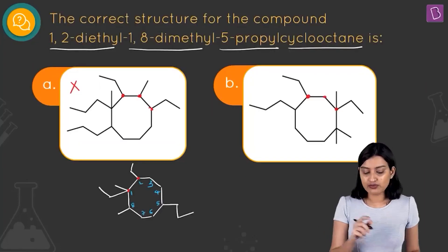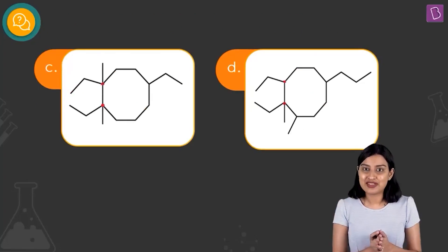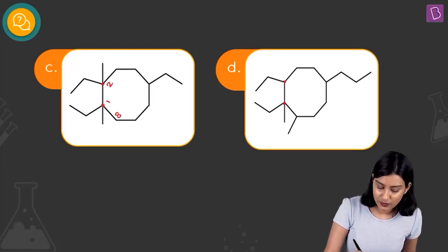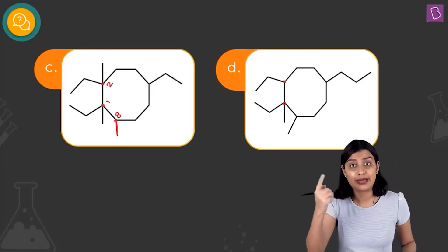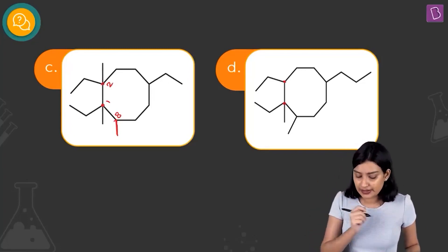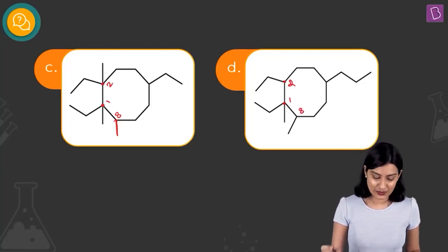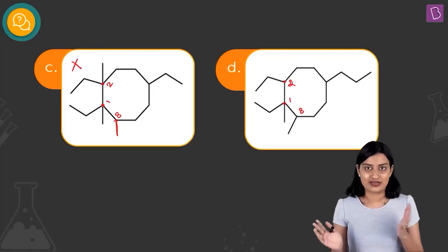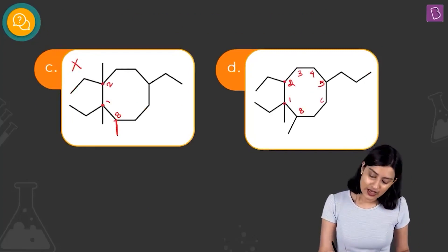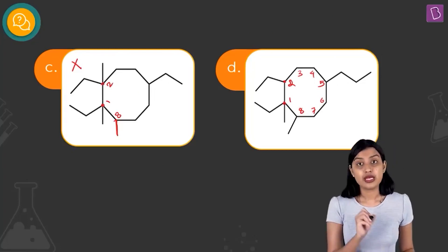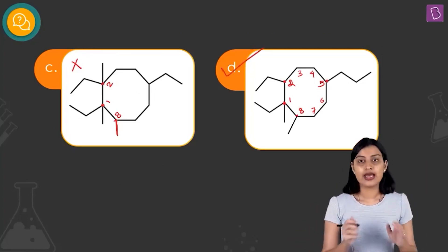Now we check '1,8-dimethyl.' Option C is wrong because it shows 1,2-dimethyl instead of 1,8-dimethyl. In option D, if 1 and 2 have ethyl, then the methyls fall on carbons 1 and 8 correctly — so option C is discarded. Checking the propyl on carbon 5: 1, 2, 3, 4, 5 — yes. Option D correctly shows 1,2-diethyl-1,8-dimethyl-5-propylcyclooctane, making option D the right answer.